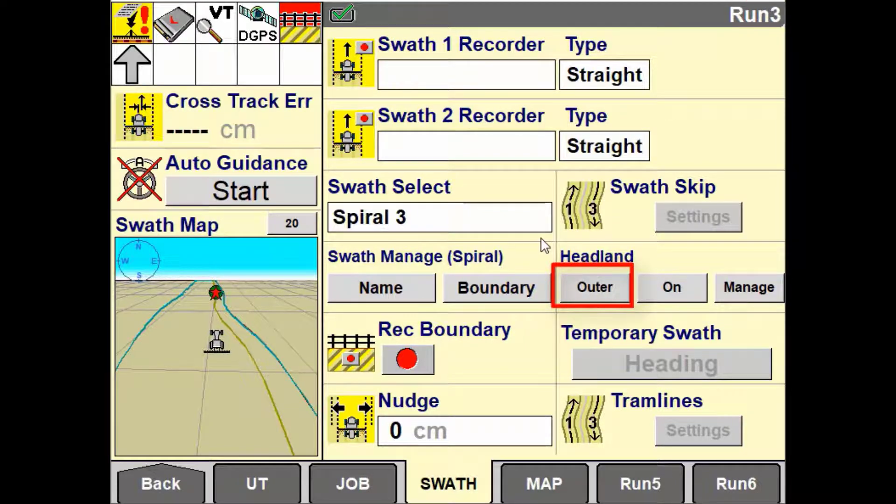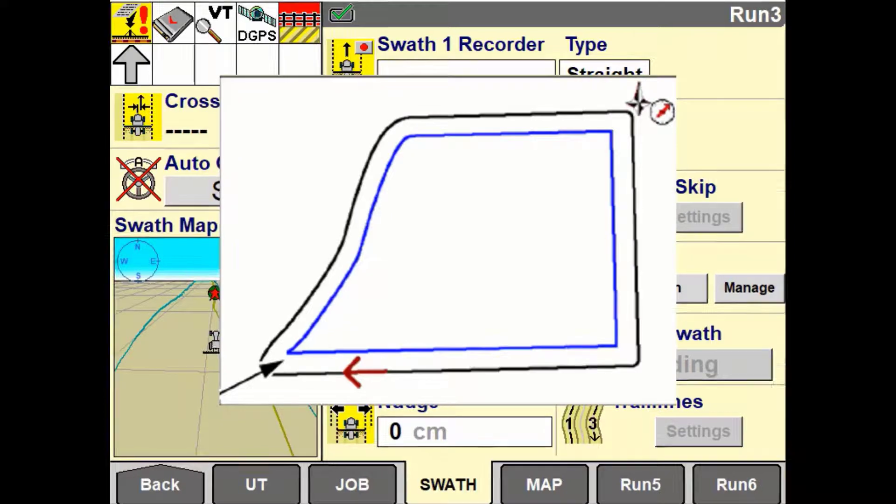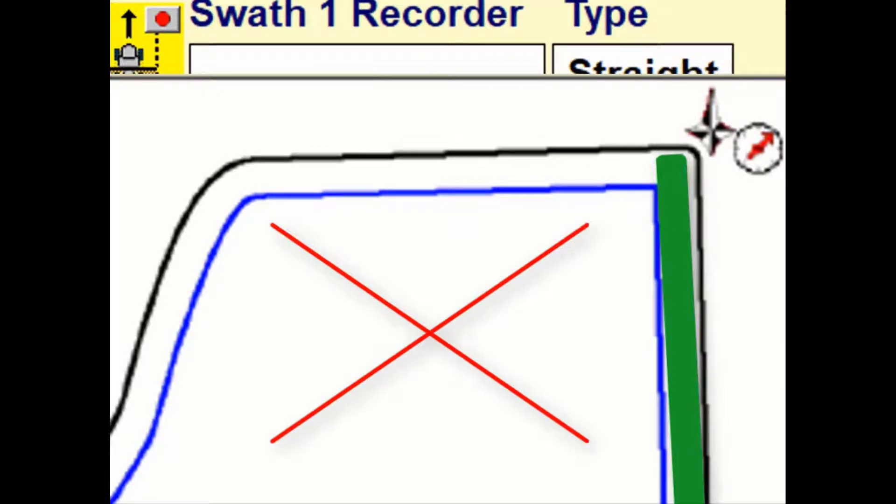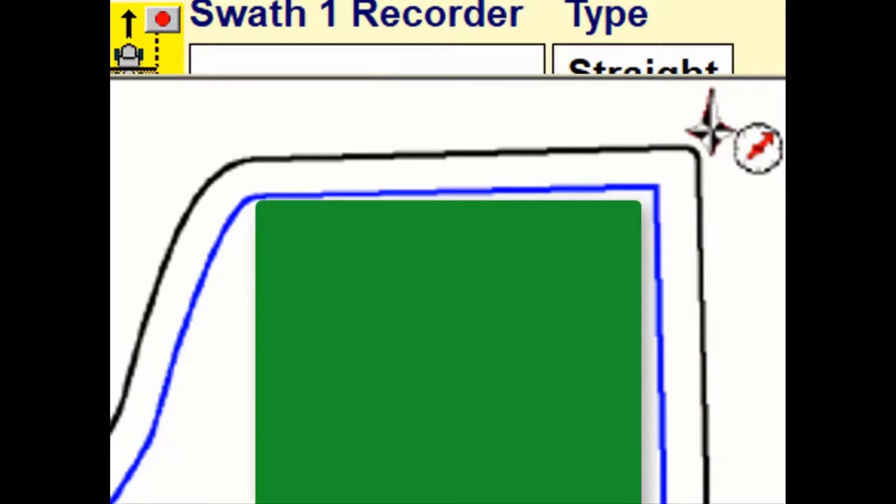Selecting outer means that product will be applied in the outer area of the headland and sections will be turned off when the implement passes across into the inner area of the field. Setting this option to inner means that the product will be applied to the infield and sections will be turned off as the implement passes out of the infield into the headland area.